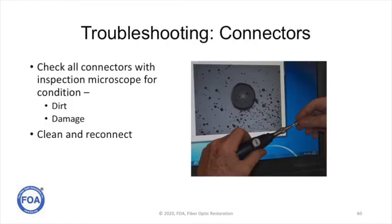Everybody in the communications electronics business will tell you that most of the problems are associated with connectors. So the first thing you always do when troubleshooting is check the connectors. You disconnect them, take a microscope, look for dirt and damage, clean them and reconnect them. That's where you start with all the troubleshooting of the cable plant.